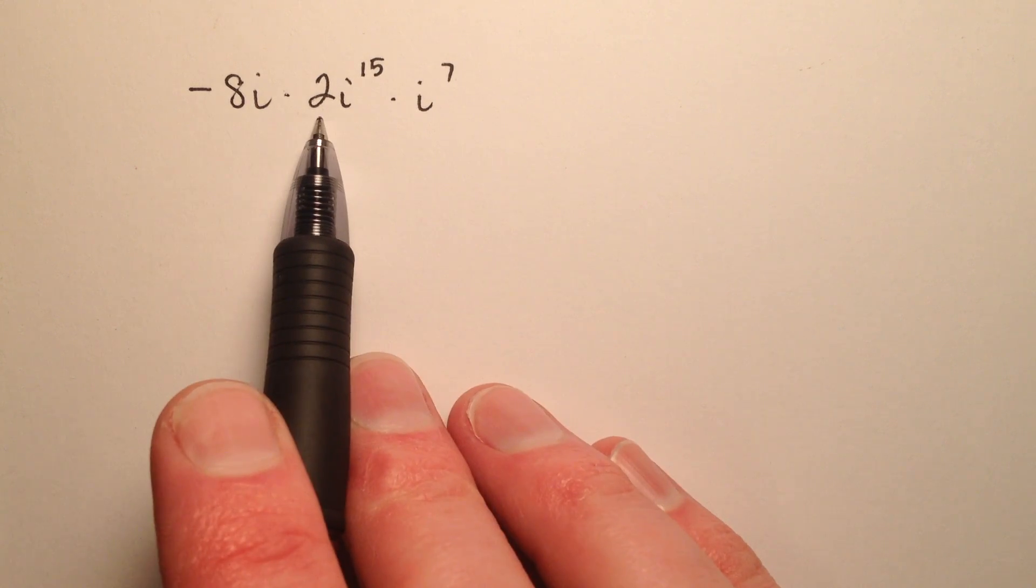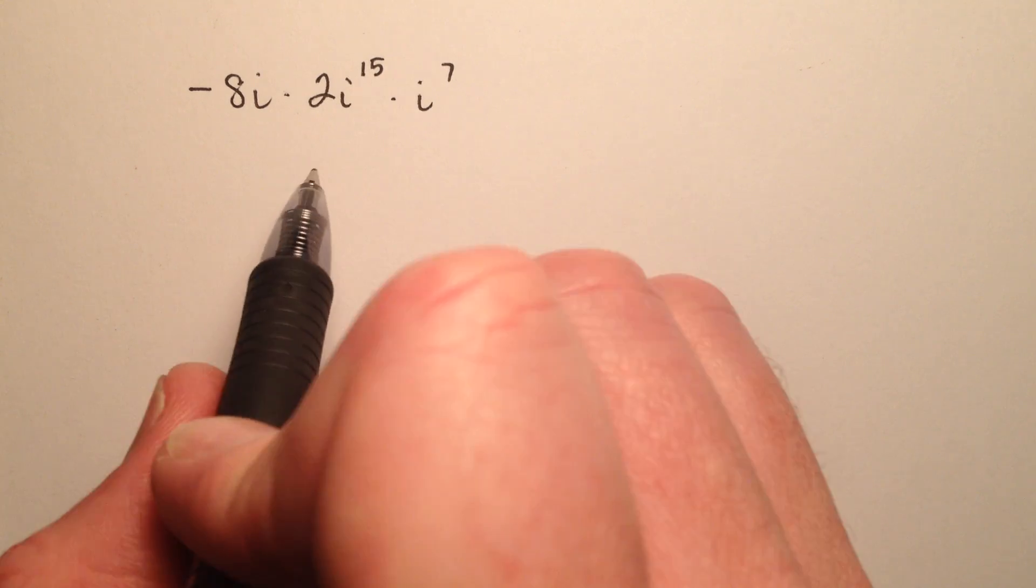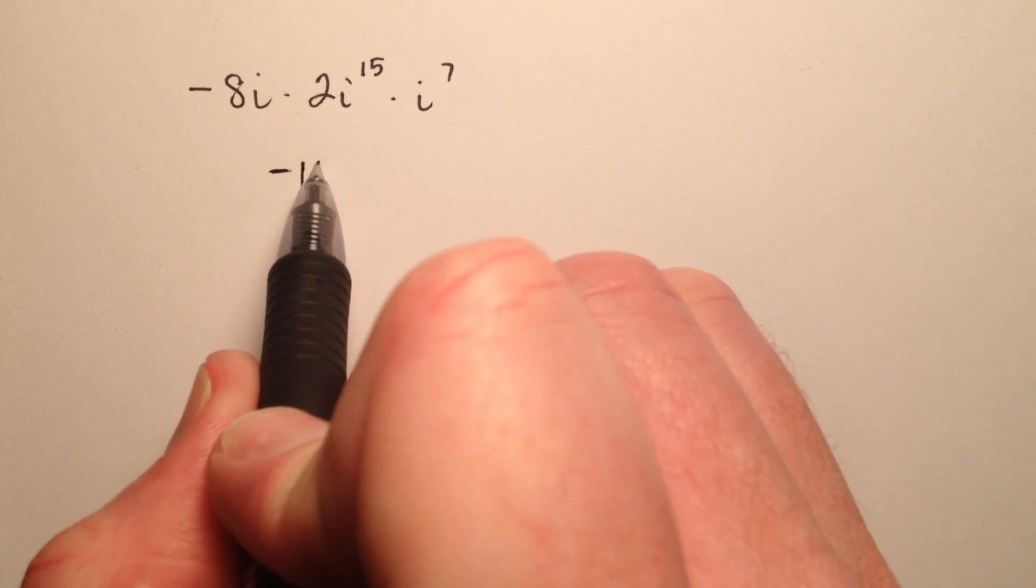So our coefficients here, negative 8 and 2, we can multiply those together to get negative 16.